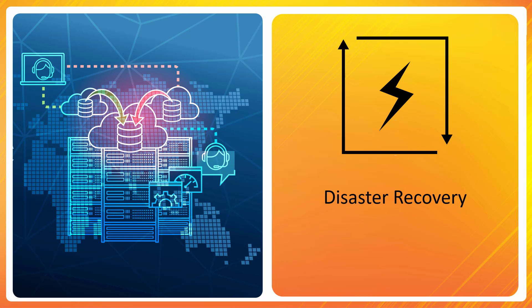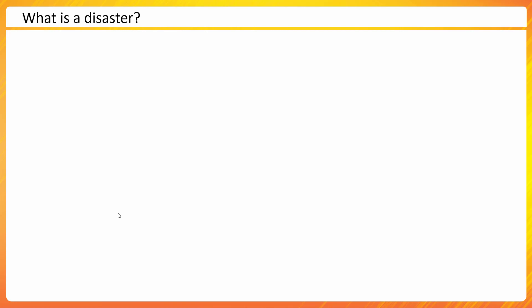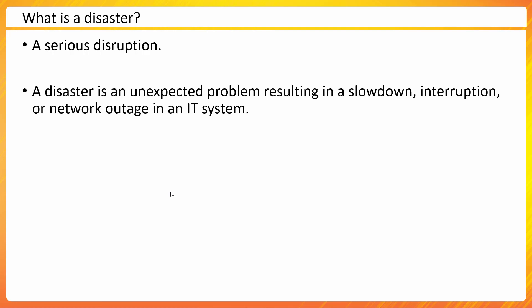Let's talk about disaster recovery. I would like to define disaster first in terms of IT. The simplest definition I could come up with was a serious disruption — that's what we call a disaster. If we want to go a little further into the technical definition, it would be an unexpected problem resulting in slowdown, interruption, or network outage in an IT system.